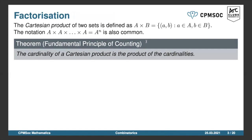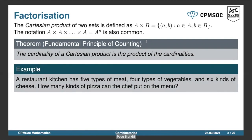One important technique in combinatorics is writing one set as a Cartesian product of multiple sets. For example: there are five types of meat, four types of vegetables, and six kinds of cheese you can put on a pizza, and you can only choose one of each. We have a set of meats, a set of vegetables, and a set of cheeses, and we want to choose one element from the Cartesian product of these sets — that is, a triplet where the first element is a meat, the second is a vegetable, and the third is a cheese.